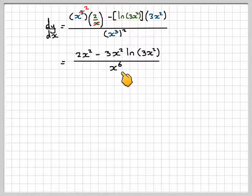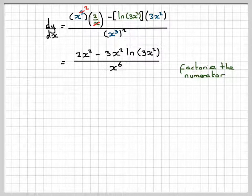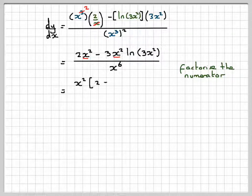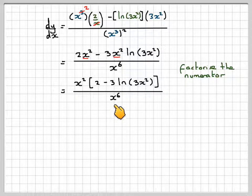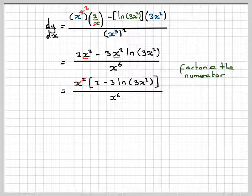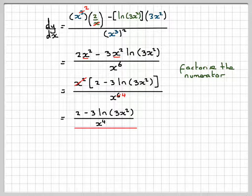over x to the 6. x cubed squared is x to the 6. What is the common factor in the numerator? It's just the x squared, so that comes out: x squared left in brackets 2 minus 3 ln of 3x squared all over x to the 6. Now this x squared and this x to the 6 can cancel, so we get x to the 4. So we get 2 minus 3 ln of 3x squared over x to the 4.